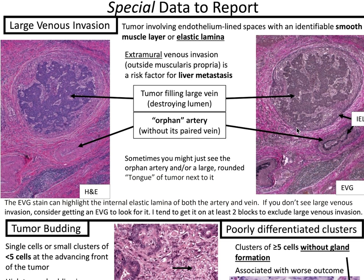Special data to report includes large venous invasion, which is when tumor involves endothelium-lined spaces with an identifiable smooth muscle layer or elastic lamina. Extramural venous invasion is outside the muscularis propria and is a risk factor for liver metastasis. You will see tumor filling the large vein and destroying the lumen, with an orphan artery without its paired vein — a key hint. Another hint is a large rounded tongue of tumor adjacent to it. The EVG stain highlights the internal elastic lamina of both artery and vein. If large venous invasion is not easily seen on H&E, consider the EVG stain. Dr. Shabberg recommends getting at least two blocks to exclude large venous invasion.